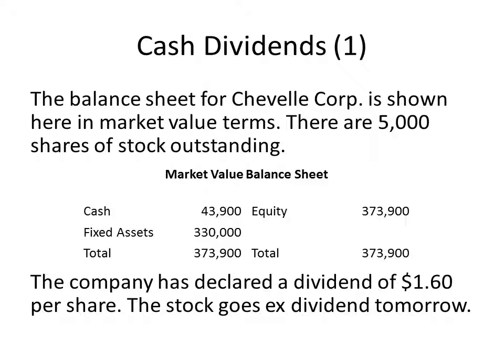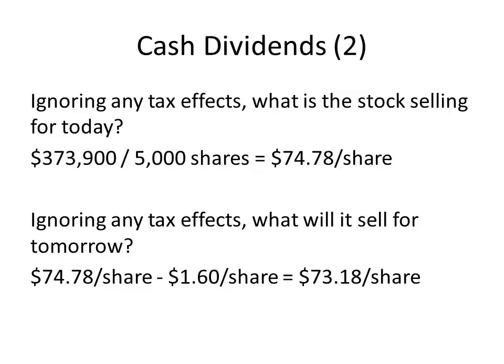Let's start with this example about the Chevelle Corp. This is a market value balance sheet — remember that the majority of balance sheets we deal with are book values. There are 5,000 shares outstanding, so the value of each share is $373,900 divided by 5,000, which gives us $74.78 per share. The company has declared a dividend of $1.60 per share, and the stock goes ex-dividend tomorrow.